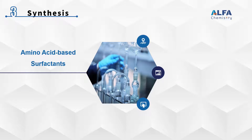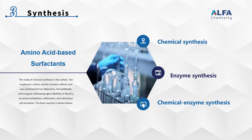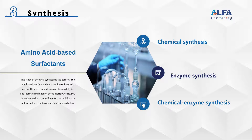The synthetic methods of amino acid-based surfactants include chemical synthesis, enzyme synthesis, and chemical-enzyme synthesis. The study of chemical synthesis is the earliest. The amphoteric surface activity of aminosulfonic acid was synthesized from alkylamine, formaldehyde, and an organic sulfonating agent by aminomethylation, sulfonation, and solid phase salt formation. The basic reaction is shown below.